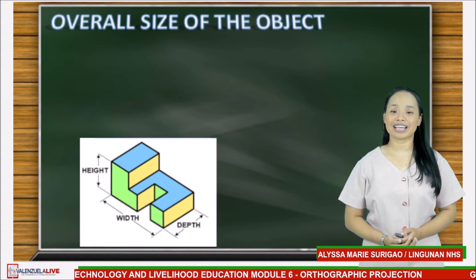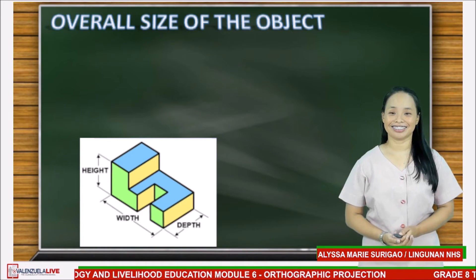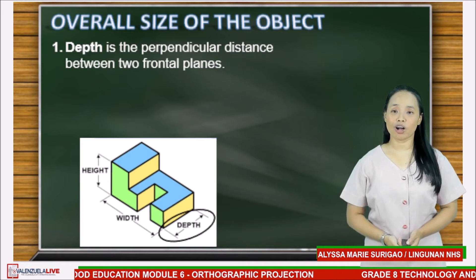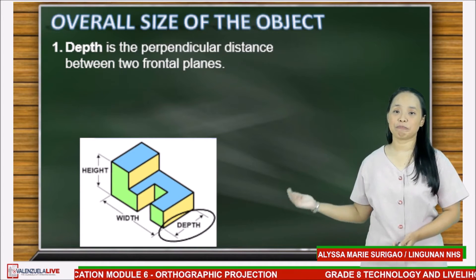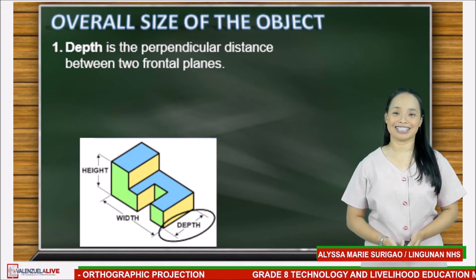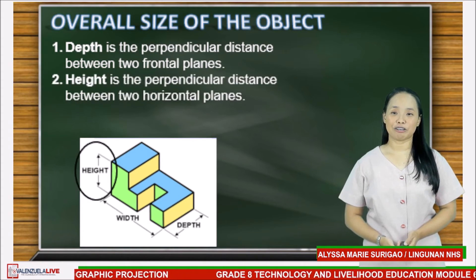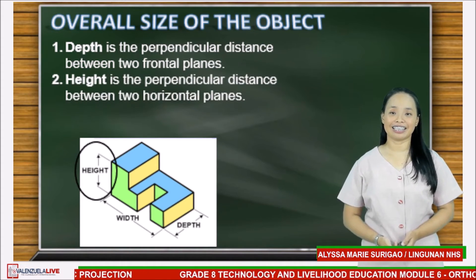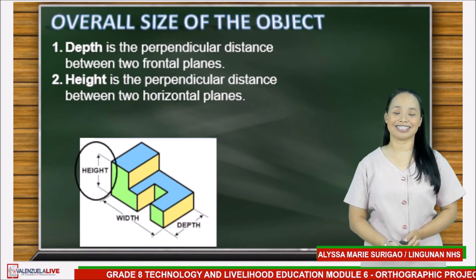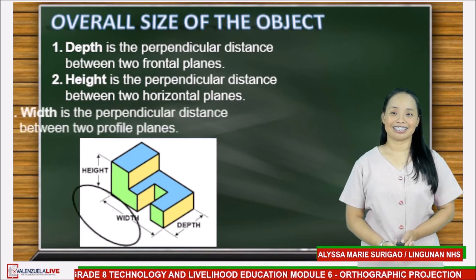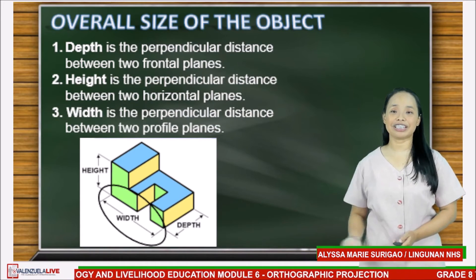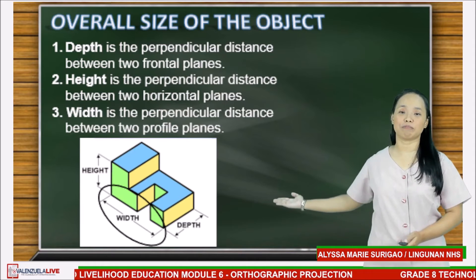Overall size of the object: Number one is depth — the perpendicular distance between two frontal planes. Number two is height — the perpendicular distance between the horizontal planes. The last one is width — the perpendicular distance between two profile planes.